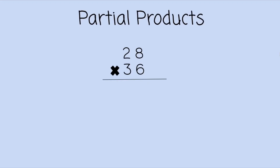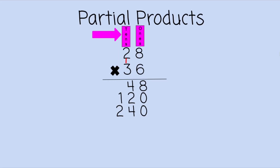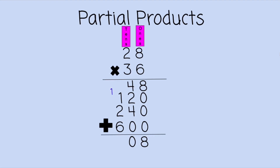Next, we'll talk about partial products. Place value is extremely important to consider when using this strategy. This is the ones column furthest to the right, and that's the tens column to the left. We begin multiplying in the ones column: 8 times 6 is 48. Next, 6 times 2 — remember, this 2 is in the tens column, it actually represents 20, so 6 times 20 is 120. 3 times 8 — remember that 3 is also in the tens column, it represents 30, so 30 times 8 is 240. Now 2 times 3 — they're both in the tens column, so this 2 represents 20 and this 3 represents 30: 20 times 30 is 600. Let's add all of these partial products together for a final product of 1008.